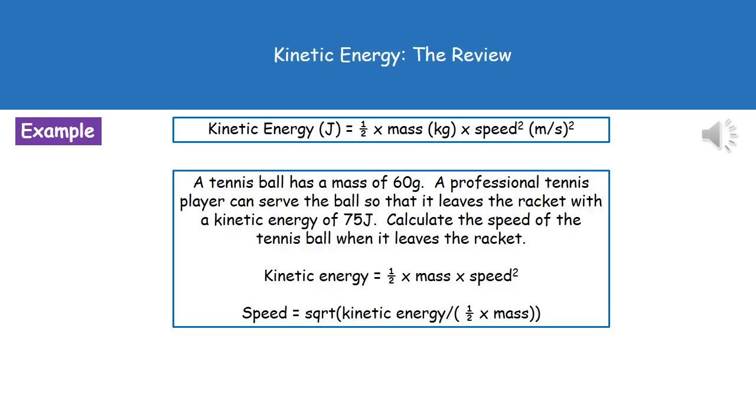We get our calculation of kinetic energy equals half times the mass times the speed squared from page 2 of our exam booklet. It won't give you the rearranged version, so you need to be able to rearrange that equation yourself on this higher tier question. If we're looking for the speed, then the first thing we need to do is, because in our kinetic energy equation speed is squared, we need to take the square root of our actual calculation. Speed equals the square root of the kinetic energy divided by half times the mass. And remember, that mass has to be in kilograms.